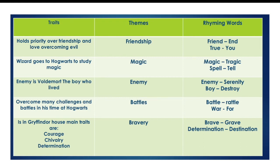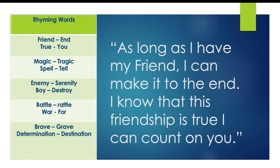As long as he's got his friends and friendship on his side, he can overcome anything. Then in the last column you want to come up with rhyming words — two rhyming word pairs from the themes. For 'friendship,' I used the word 'friend' because it's easier to rhyme than 'friendship.' For 'friend' I put 'end' because they rhyme, and I also put 'true' — as in true friendship — and for that I put 'you,' because it's a short, well-used word that's easy to incorporate into lyrics.